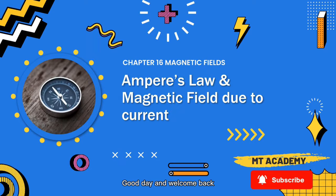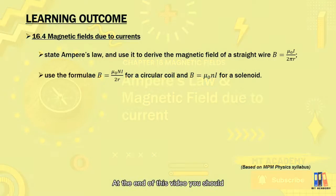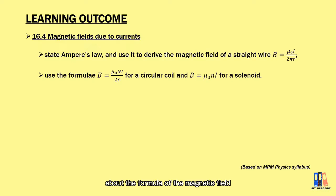Good day and welcome back. Today we're going to talk about Ampere's Law and the magnetic field due to current. At the end of this video, you should understand what Ampere's Law is about and use it to derive the magnetic field due to a straight wire. You will also learn about the formula of the magnetic field for the circular coil and solenoid.